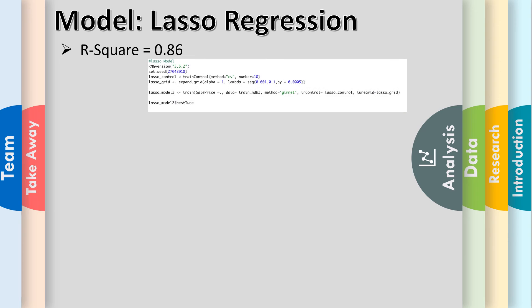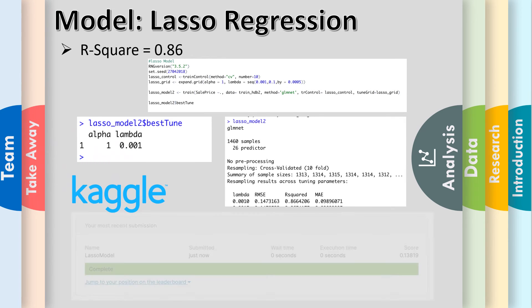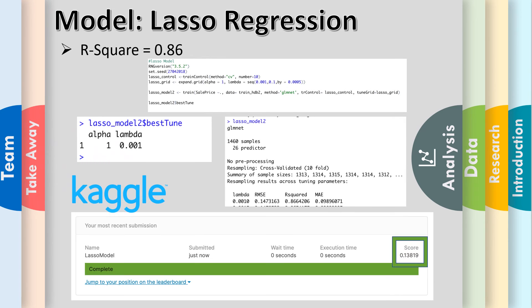Our second model, Lasso regression, got us an R-squared of 0.86 and placed us at 0.13 on Kaggle, so a marked improvement from our previous linear model.